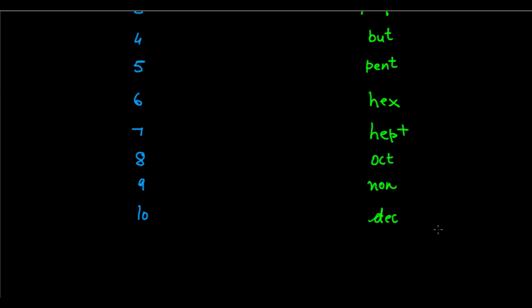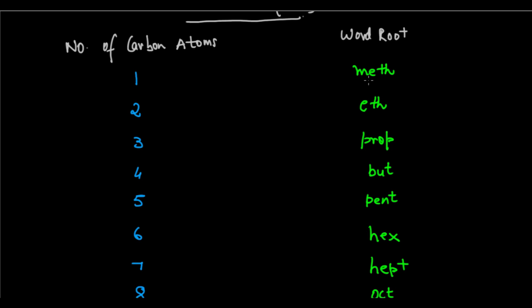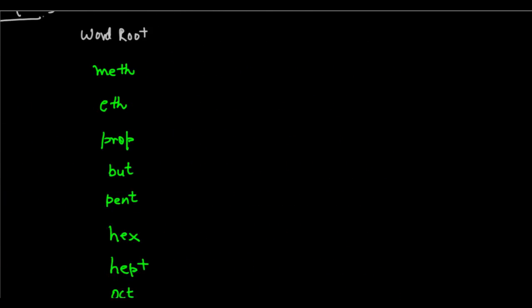So these are the word roots for the various numbers of carbon atoms. We substitute the exact word root for that particular number of carbon atoms in the IUPAC name structure. That's how we determine the word root.